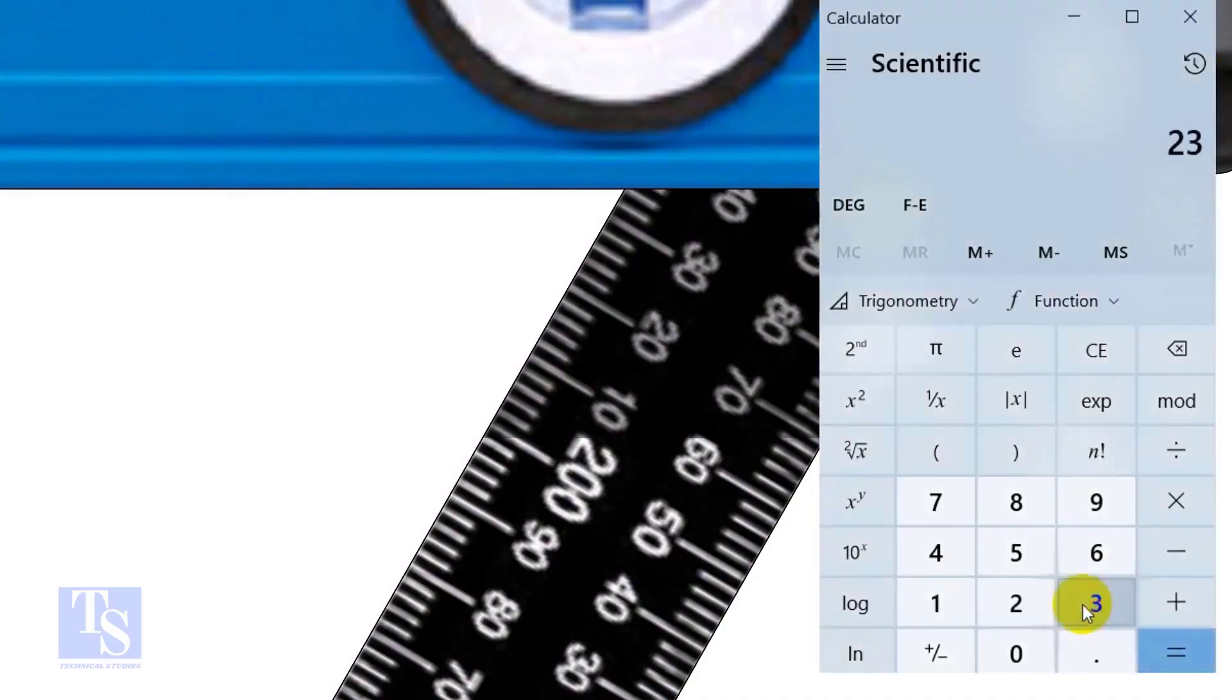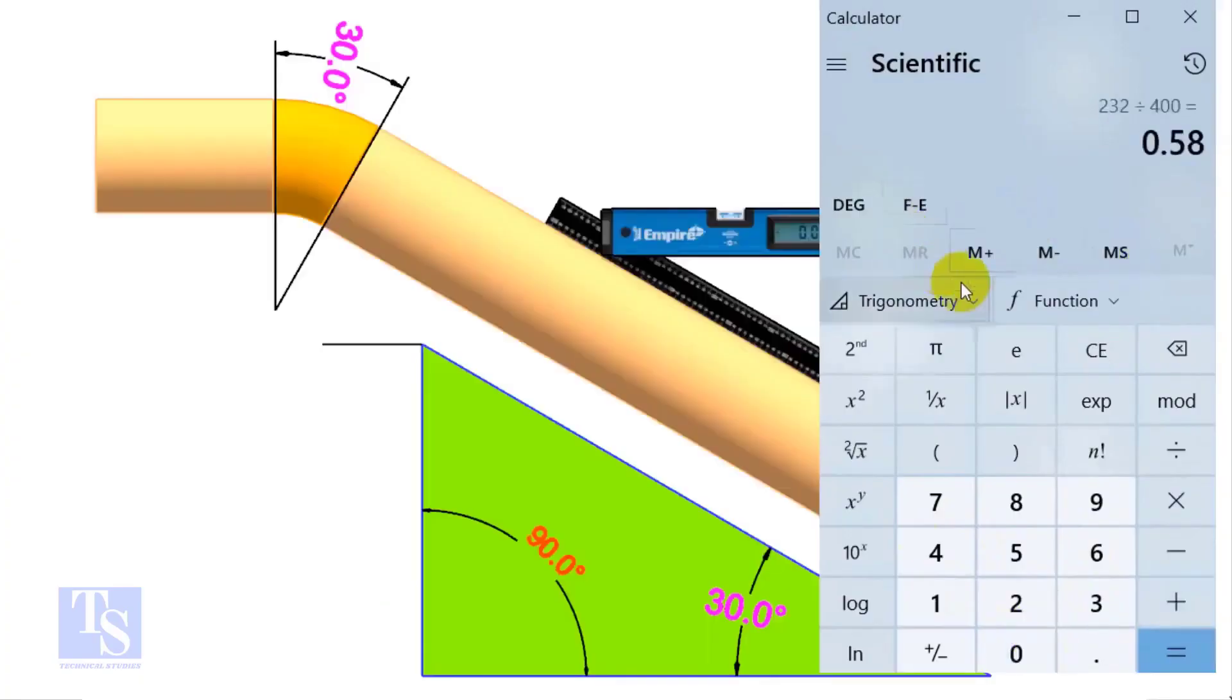Divide 232 by 400. Apply shift tan or second tan. If you round the figure, the answer is 30 degrees.